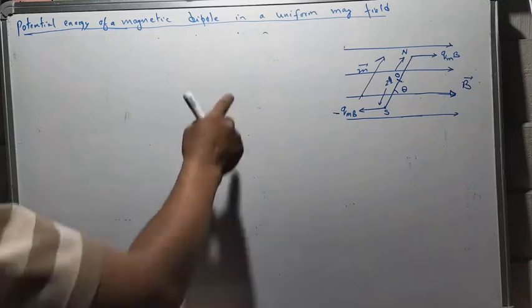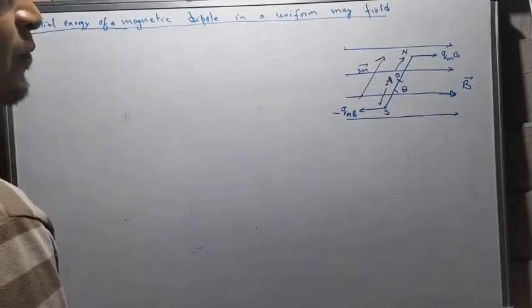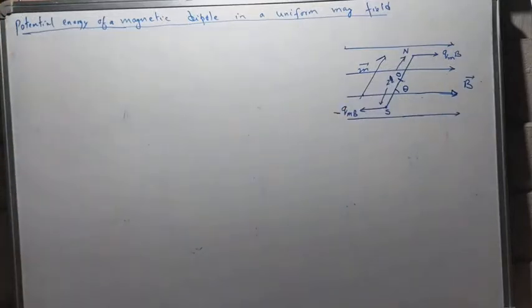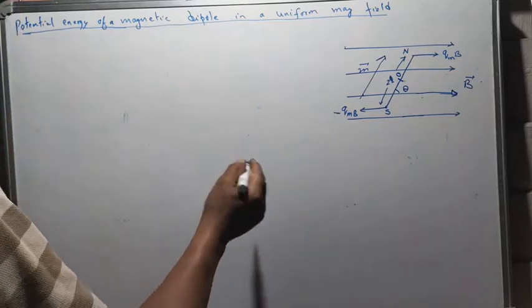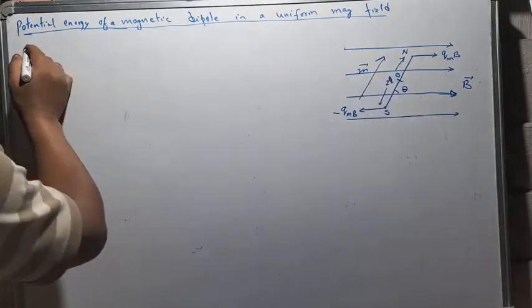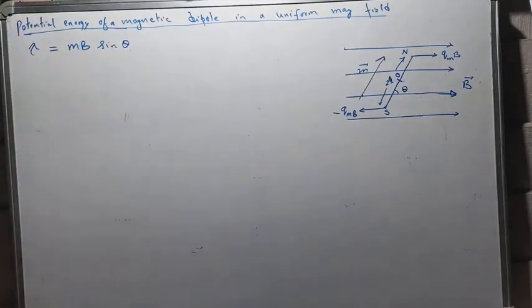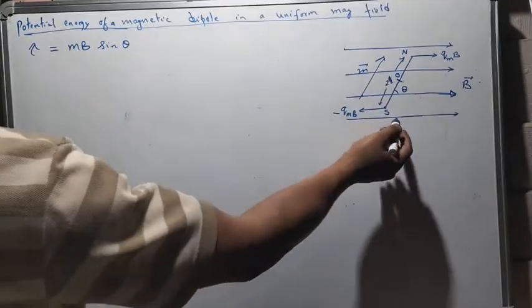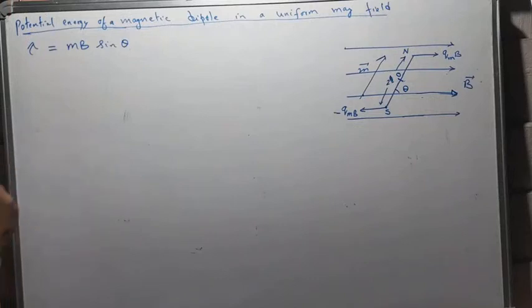Potential energy of a magnetic dipole in a uniform magnetic field. When this magnetic dipole is placed in a uniform magnetic field, it possesses a potential energy. In the previous video, we saw that when a dipole is placed in a uniform magnetic field, the dipole experiences a torque given by mb sinθ, where m is the magnetic dipole moment, b is the magnetic field, and θ is the angle between the magnetic dipole moment and the magnetic field.